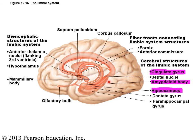The limbic system is sometimes called the primitive or emotional brain. It has three main parts: the cingulate gyrus, the amygdala (amygdaloid body), and the hippocampus. These structures are embedded in the middle of the brain and form the emotional brain.